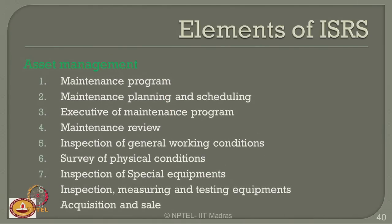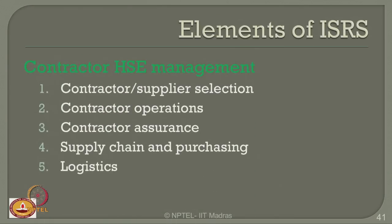The next element is asset management: how a maintenance program is developed and planned, scheduled, executed, and reviewed. How general working conditions are inspected, physical condition surveys conducted, special equipment inspected, measurement and testing performed, and equipment acquisition and sale managed. The following element is contractor HSC management: contractor supply selection, contractor operations, contractor assurance, and supply chain in purchasing and logistics.